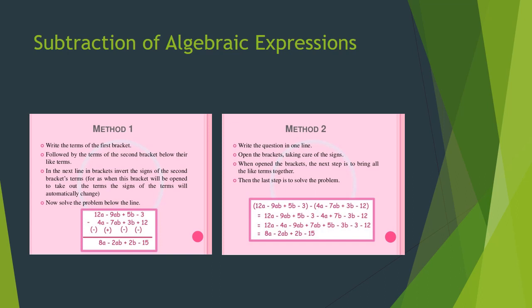Column method: write the subtrahend below the expression from which it is to be subtracted, so that like terms are in the same column. Change the sign of each term of the subtrahend and add. For example: 12a minus 9ab plus 5b minus 3, minus (4a minus 7ab plus 12). Changing signs of the subtrahend: plus 12 becomes minus 12, 3b becomes minus 3b, minus 7ab becomes plus 7ab, 4a becomes minus 4a. Adding, we get 8a minus 2ab plus 2b minus 15.